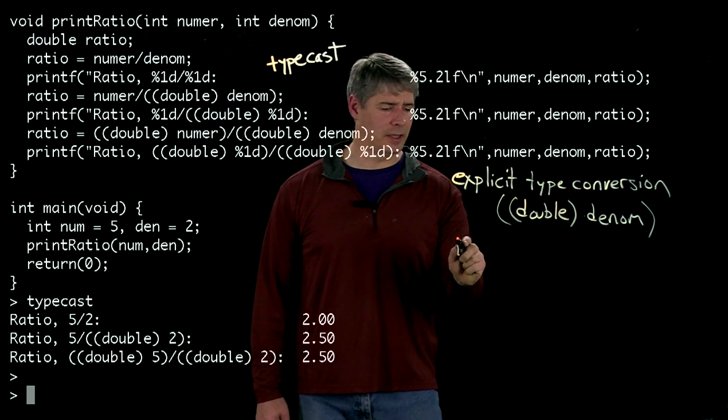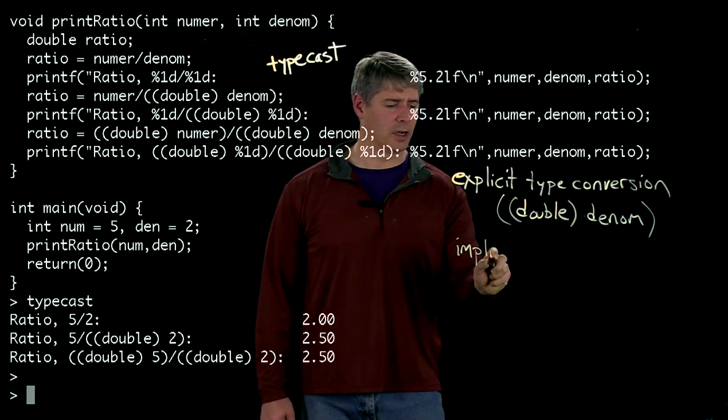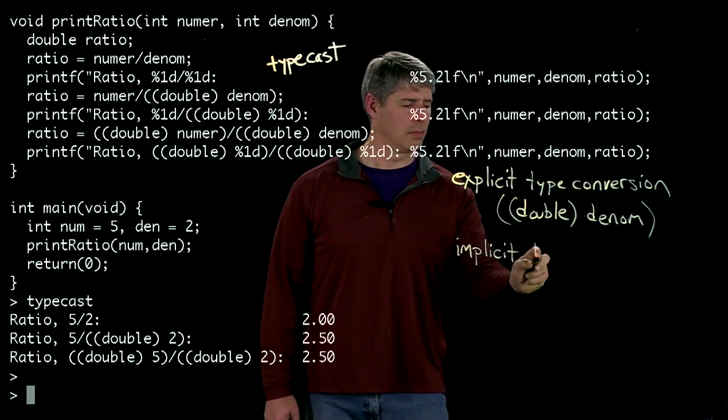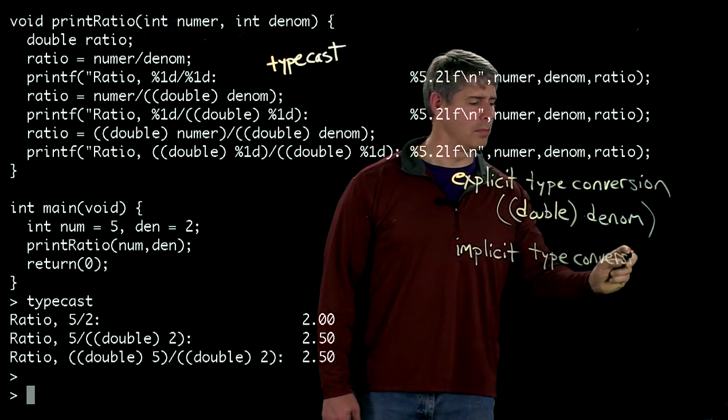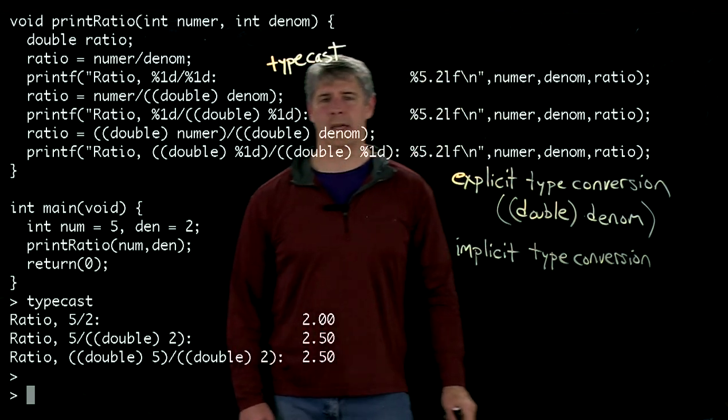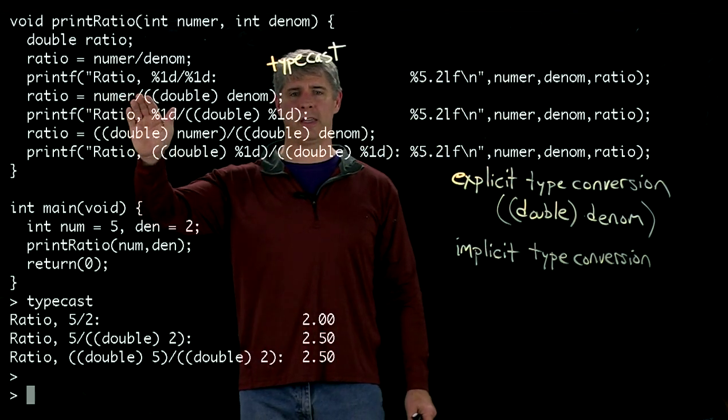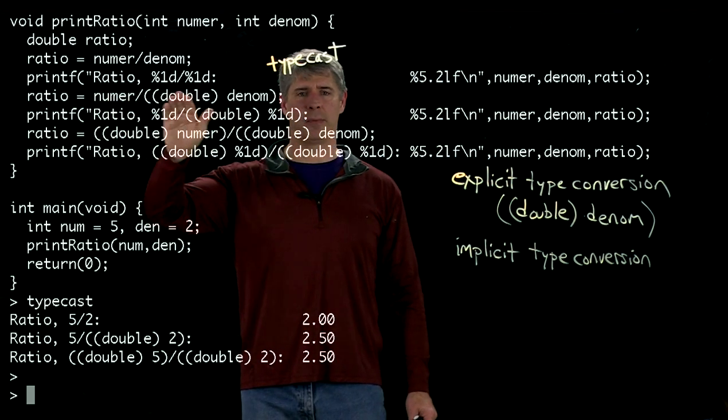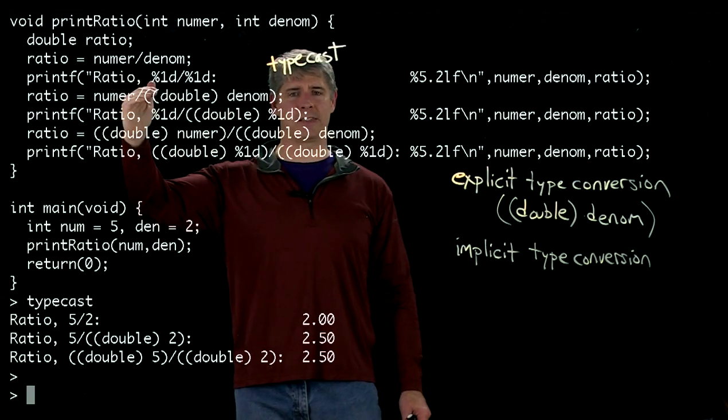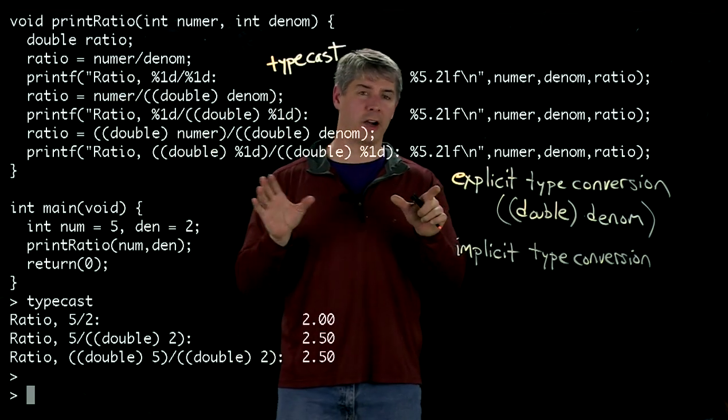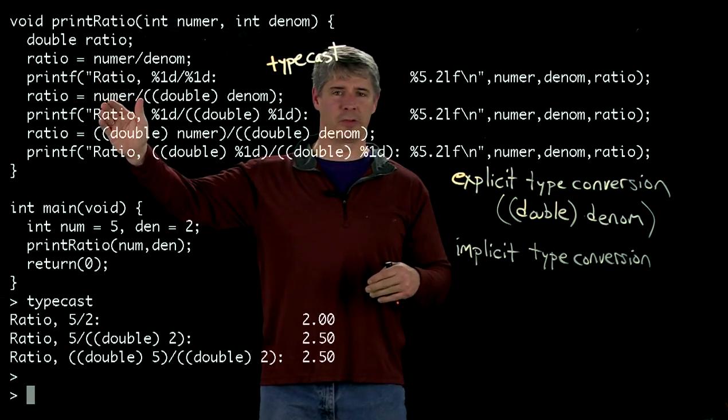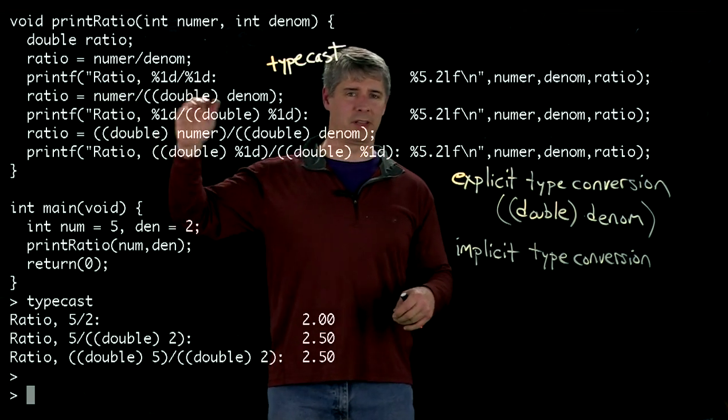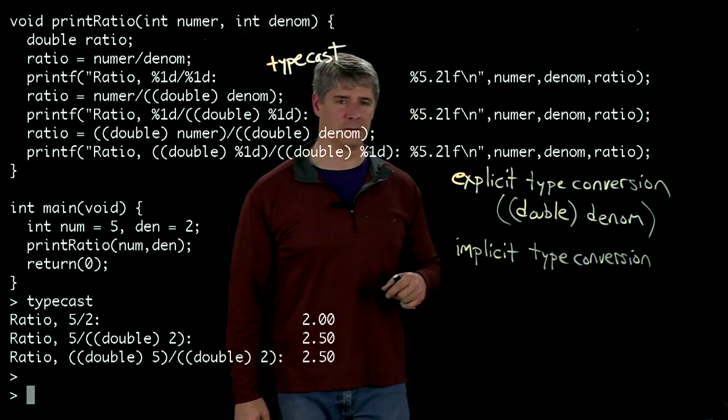We also have implicit type conversion going on, and that's happening over here where we're dividing the integer numerator by the double denominator. This divide sign wants arguments of the same type on each side, so it's automatically changing the numerator here to be of type double. That's an implicit type conversion.